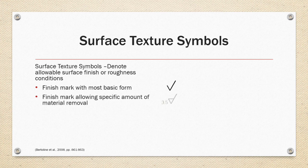A finish mark that incorporates a line across the V-shape as shown on the right allows a maximum amount of material that can be removed to achieve the desired finish.